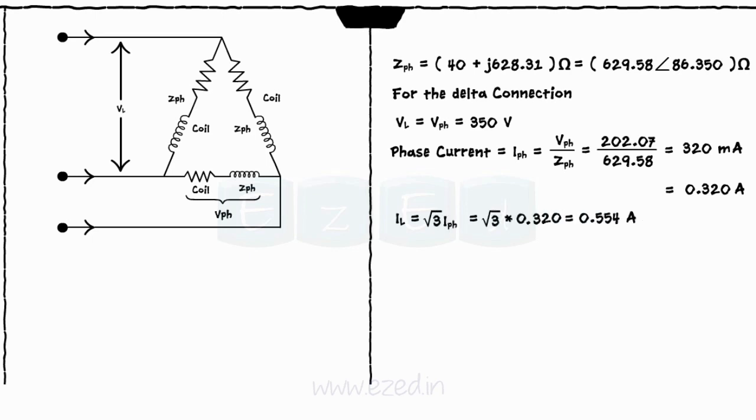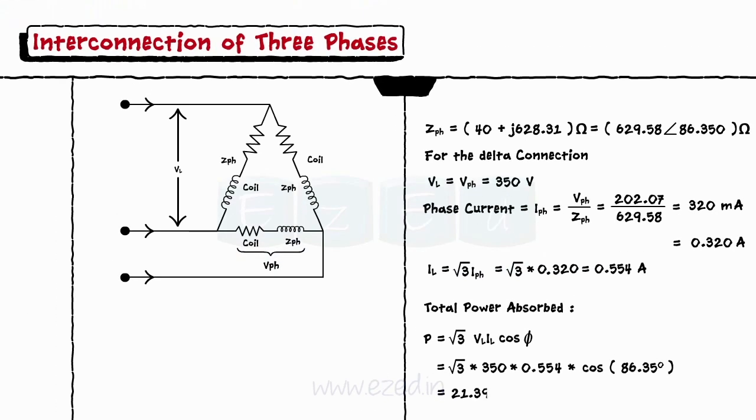The total power consumed is calculated as P equals root 3 into VL, IL cos phi equals 21.39 watts.